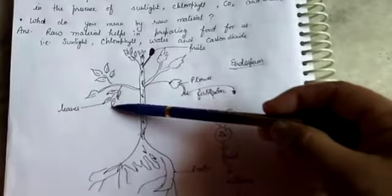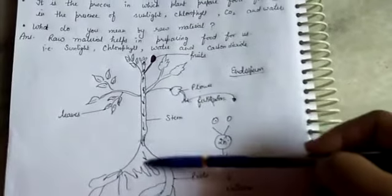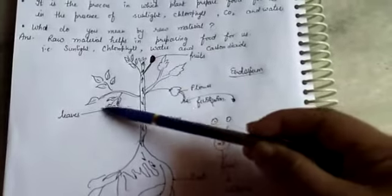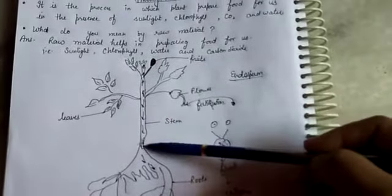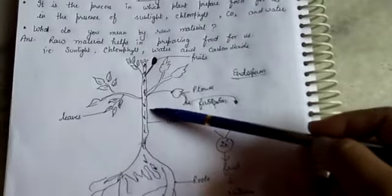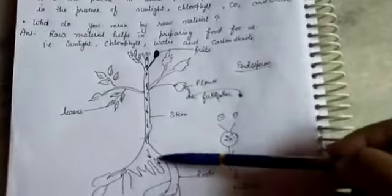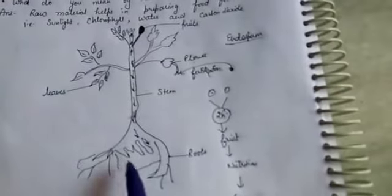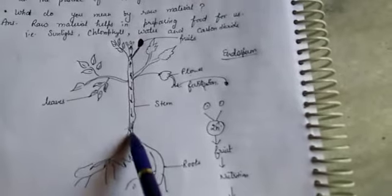From it, all the food goes to the upper side and to the lower side. It is possible with the phloem. Phloem is the main structure which transfers the food to the stem and to the roots also. Roots absorb the water, minerals, and all the water minerals.